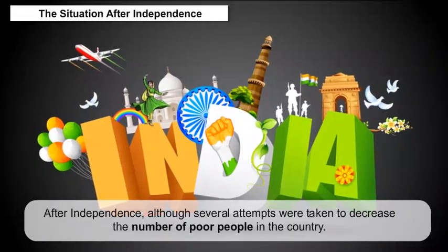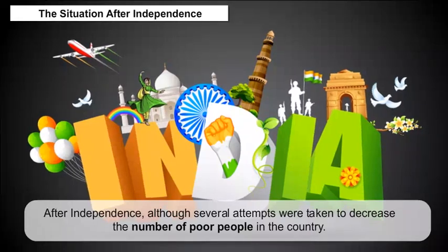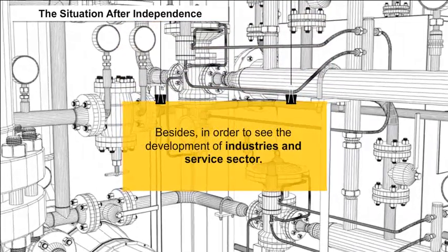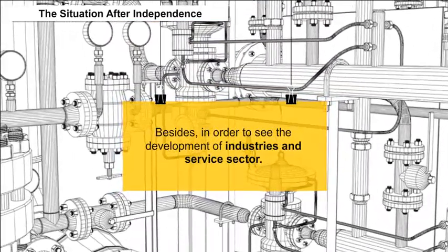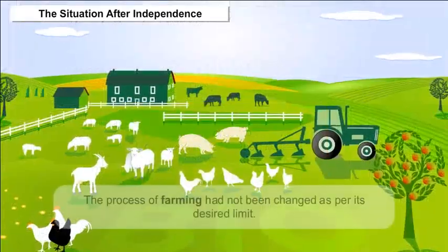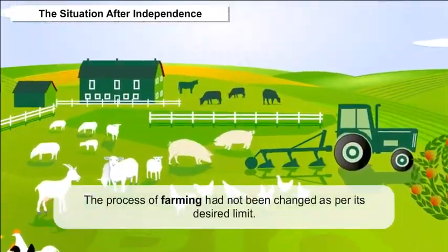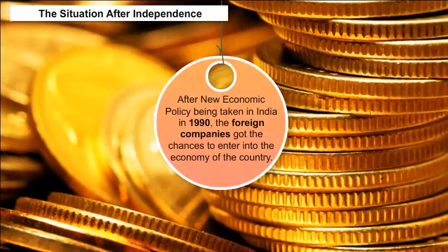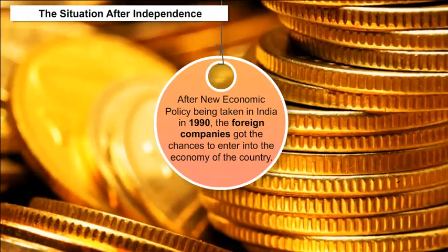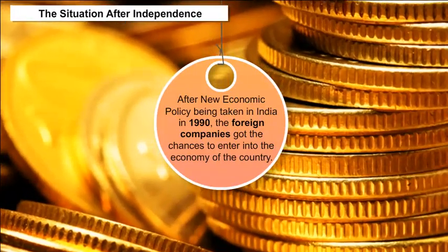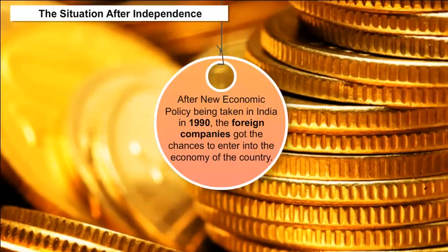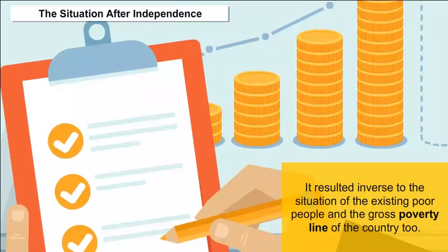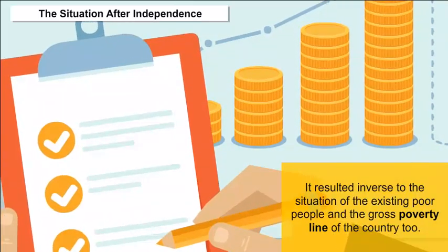After independence, although several attempts were made to decrease the number of poor people in the country, the process of farming had not been improved as per its desired limit in order to develop industries and the service sector. After the new economic policy was adopted in India in 1990, foreign companies got chances to enter the economy, which resulted in worsening the situation of the existing poor people and the gross poverty line of the country.